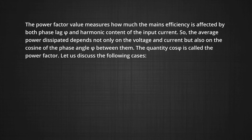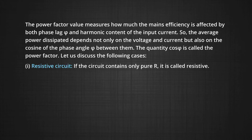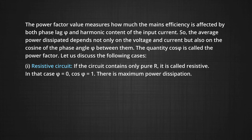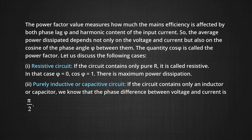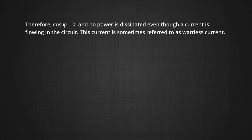Let us discuss the following cases for the power factor. Case 1: resistive circuit. If the circuit contains only pure resistance, φ = 0 and cos φ = 1, so there is maximum power dissipation. Case 2: purely inductive or capacitive circuit. If the circuit contains only an inductor or capacitor, the phase difference between voltage and current is π/2, so cos φ = 0 — there is no power dissipation. Even though a current is flowing in the circuit, this current is sometimes referred to as wattless current.